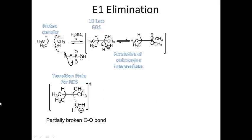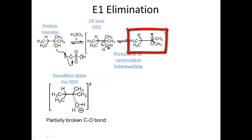This is the transition state on the way to formation of the carbocation intermediate. Then with the carbocation intermediate, I need to do a proton transfer — I need to deprotonate — so that I can form my double bond.